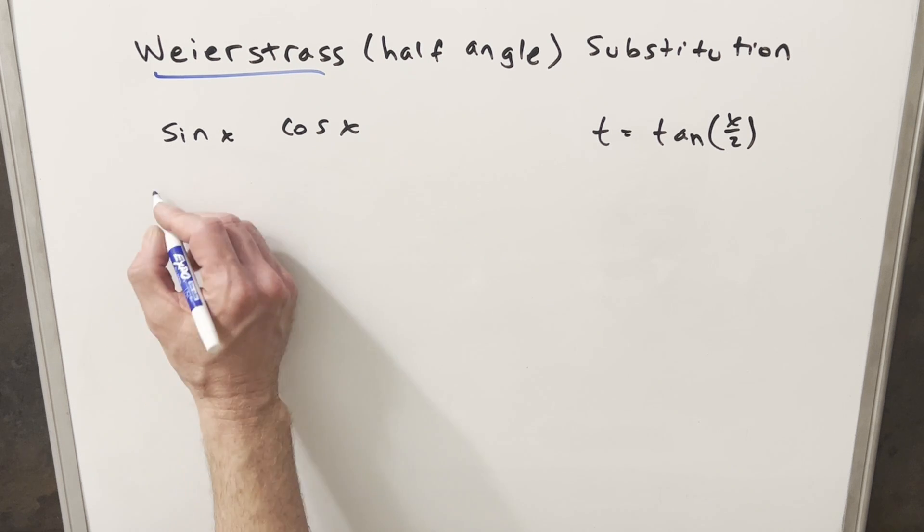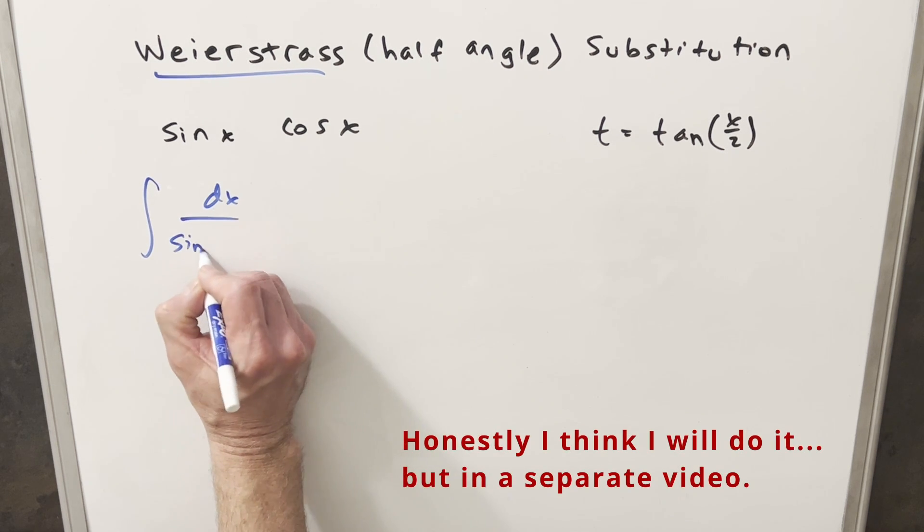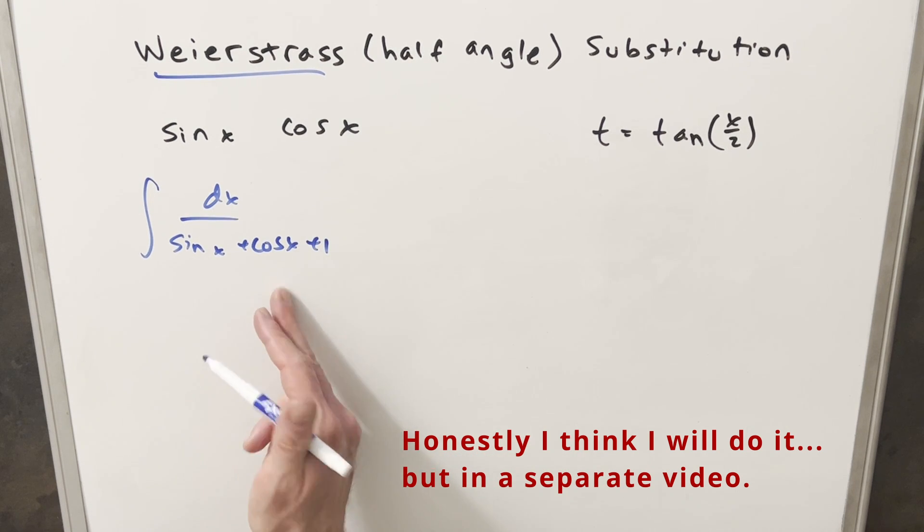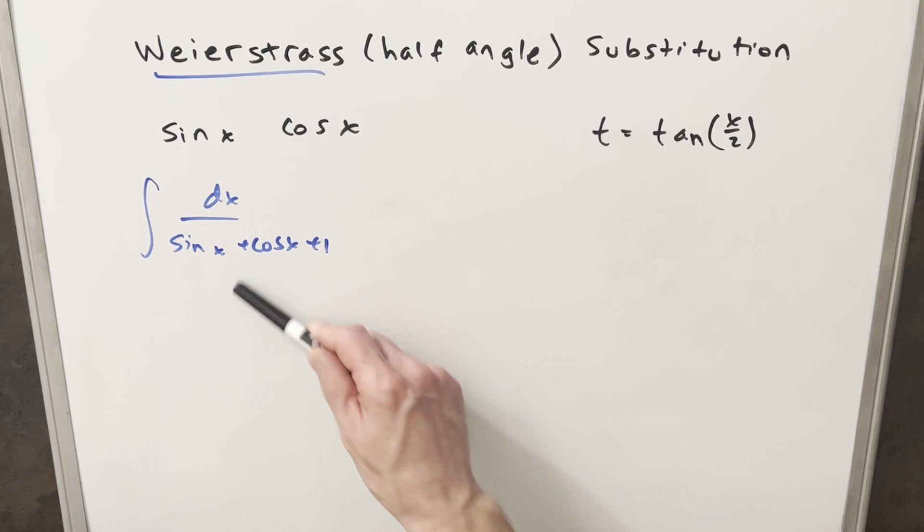So just for an example that I'm not going to do, we could have an integral like sine x plus cosine x plus one. This would be kind of a good case for a Weierstrass substitution. This is kind of an unusual substitution because we don't even have any half angles. But it turns out this is going to work pretty nice.